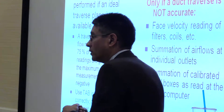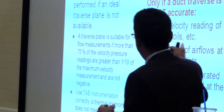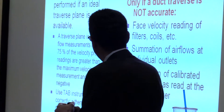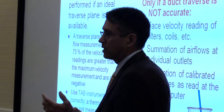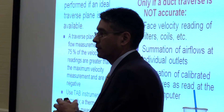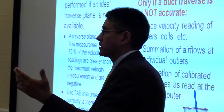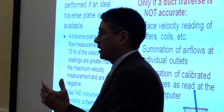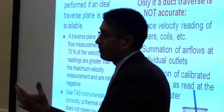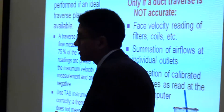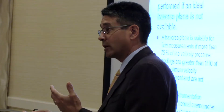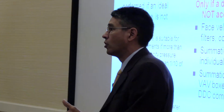Only if a duct traverse is not accurate do we start getting creative — a face coil velocity, a filter velocity reading, or possibly airflow from the outlets. That can get interesting if you have duct leakage or lots of outlets. Another option is summation of calibrated VAV boxes: once all the VAV boxes are calibrated, open the system up and read those airflows off the computer. You're at the mercy of DDC system tolerances and measurement tolerances, but it's better than nothing.